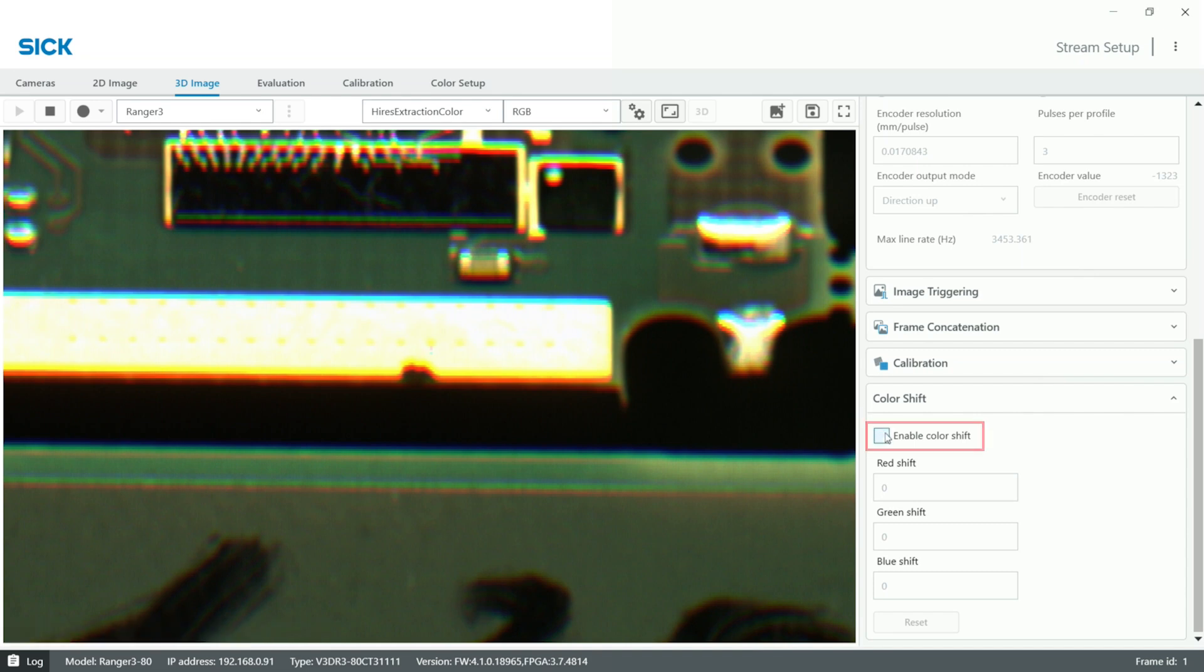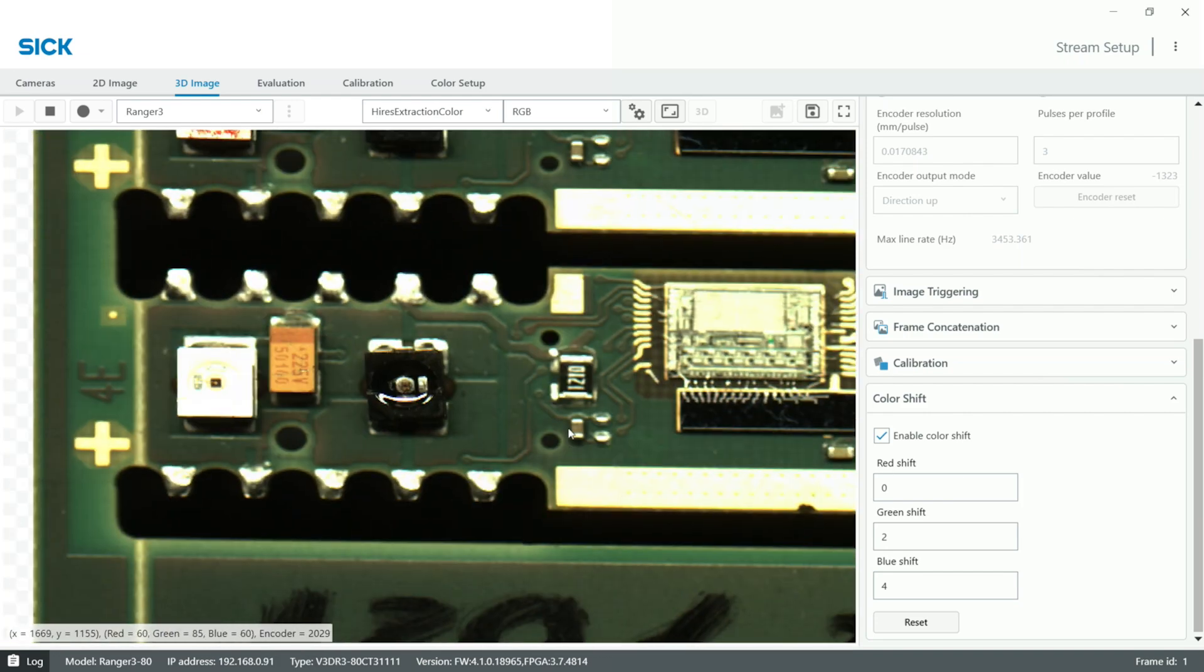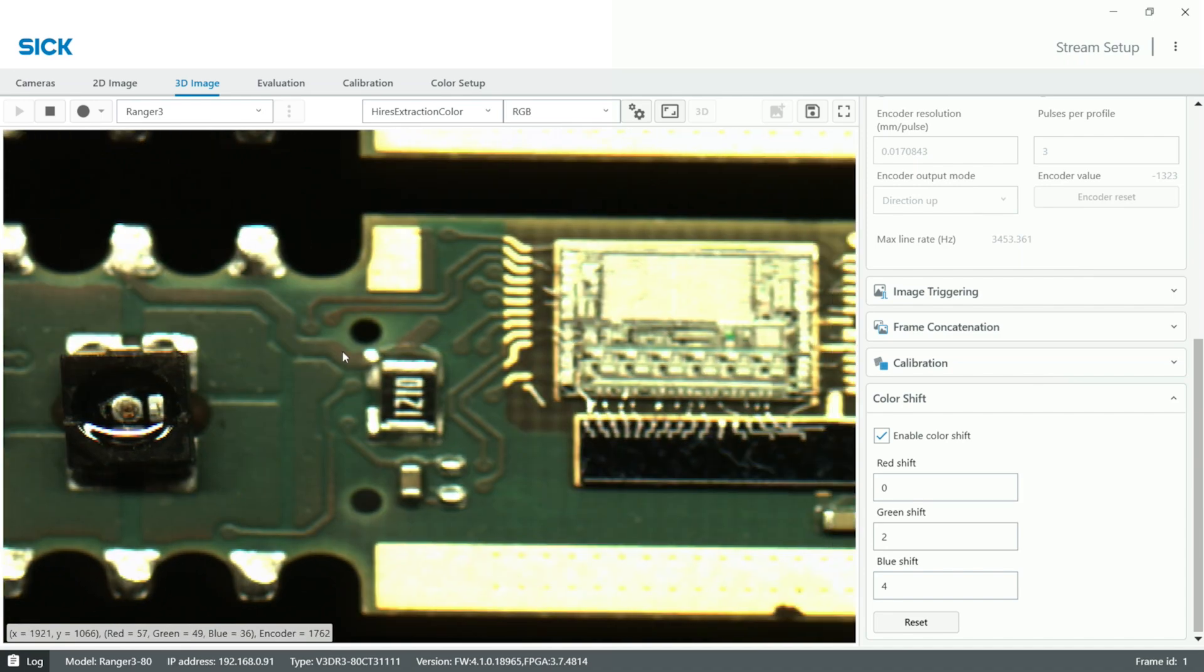Enable the color shift. Start by shifting the green channel. And then shift the blue channel to align with the red and the green channels. There we go. We can see all the finer details much more clearly now.